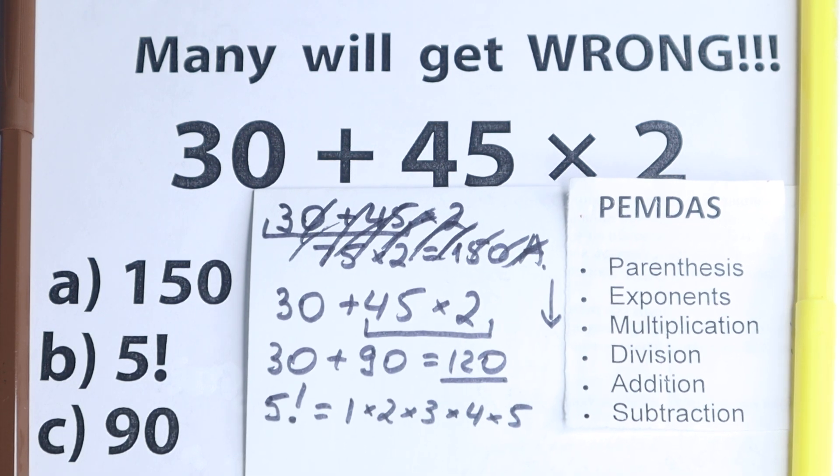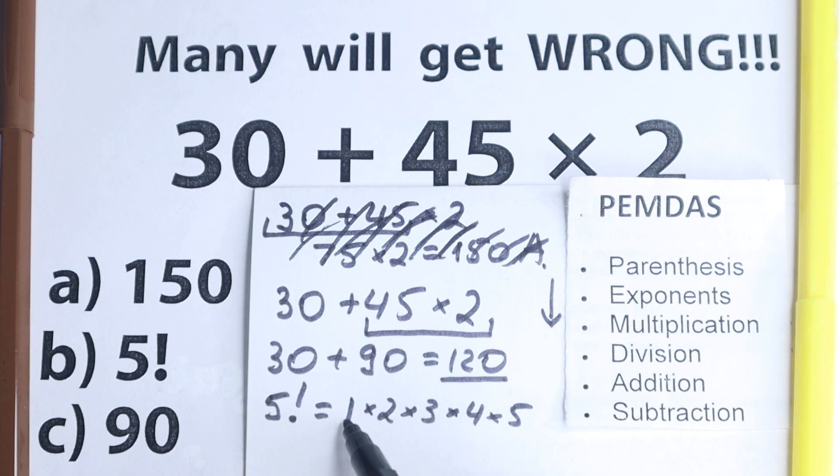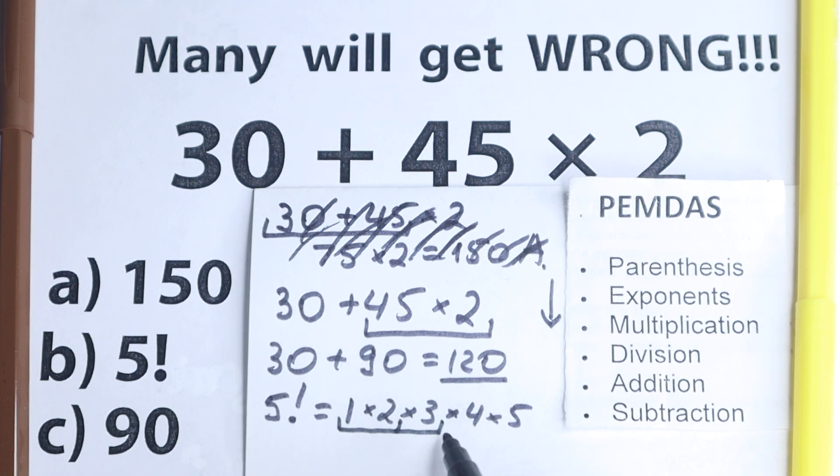We have a product from 1 to 5, so let's look at it. 1 times 2 is 2, 2 times 3 we have 6, 6 times 4 is 24, and 24 times 5, it looks like 120.